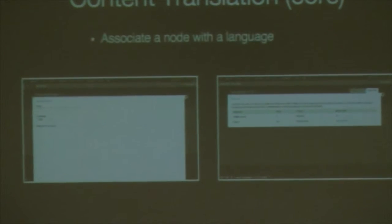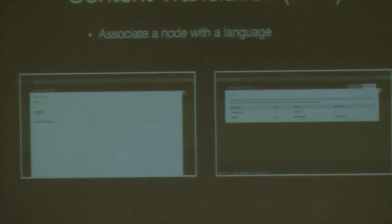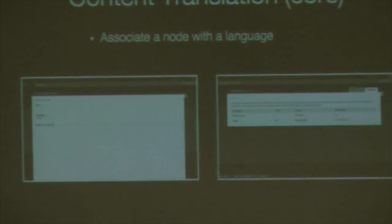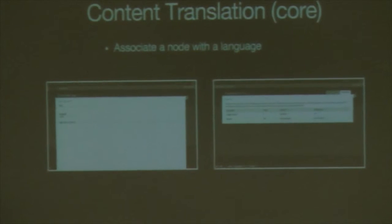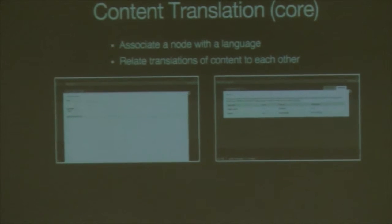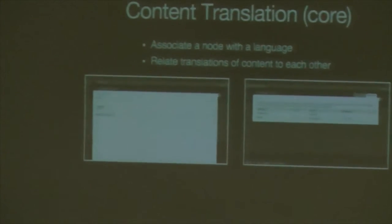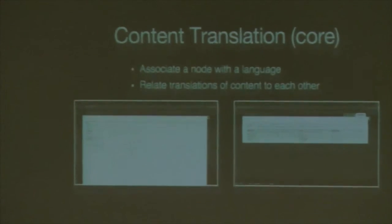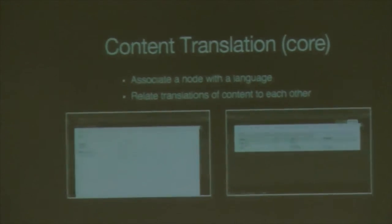The second multilingual module included in core is Content Translation. It allows you to associate a node with a language. Once you've set up a node to be translatable, you get a language field where the content editor can select which language it's in. It also allows you to relate node translations to each other. Every translation of a node is a node in itself — the English version is its own node, the French version is its own node, the Arabic version is its own node — and with content translation you link them together.